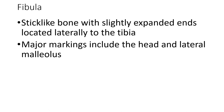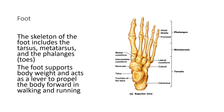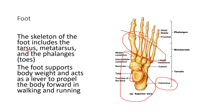The fibula is a stick-like bone, slightly expanded at the ends, located lateral to the tibia. Major markings include the head and the lateral malleolus, and it forms a joint with the tibia. The tibiofibular joint distally articulates with the talus. The skeleton of the foot includes the tarsal bones, the metatarsals, and the phalanges — the same number of metatarsals as metacarpals and the same number of phalanges as in the hand. Instead of carpal bones, we have tarsal bones.